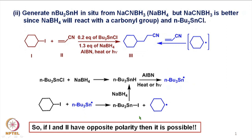During the process, tributyltin iodide is regenerated from the starting material, and this tributyltin iodide is then reduced with sodium borohydride used in more than one equivalent — here 1.3 equivalents. By using a catalytic amount of tin reagent with excess reducing agent like sodium borohydride or sodium cyanoborohydride, one avoids the generation of a large amount of tributyltin hydride or tin impurities in the reaction mixture, which are difficult to remove.